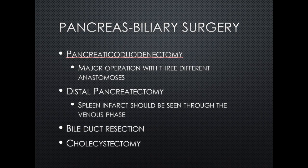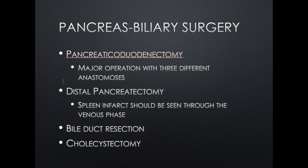Now let us first start with pancreas or biliary surgery. There are several kinds of surgery for the pancreas and bile duct. Pancreaticoduodenectomy — whether the Whipple operation or the pylorus-preserving pancreaticoduodenectomy — is one of the most technically difficult operations in this area. It has three anastomoses: the pancreaticojejunostomy, the hepaticojejunostomy, and the gastrojejunostomy or duodenojejunostomy. Let me use the postoperative CT of a patient who underwent pylorus-preserving pancreaticoduodenectomy as an example for postoperative CT of pancreas/biliary surgery.